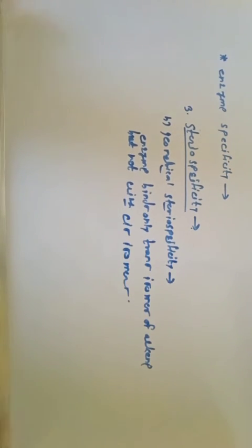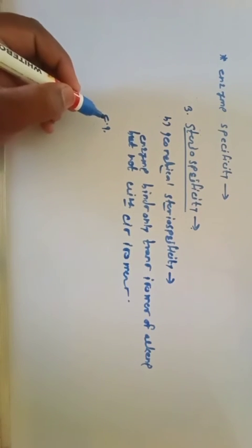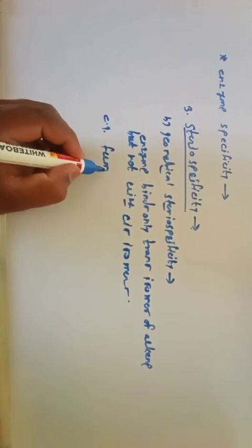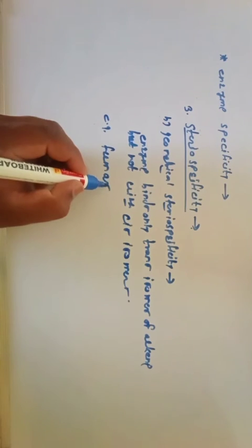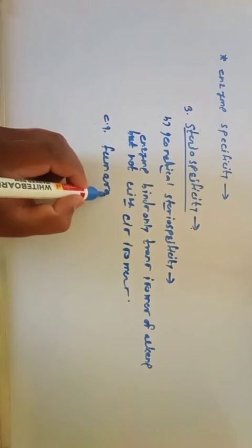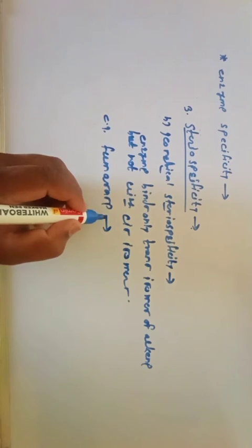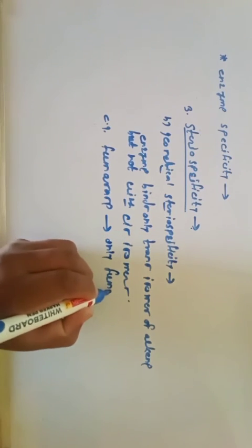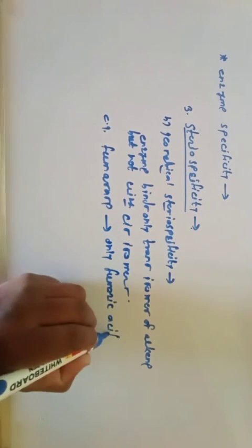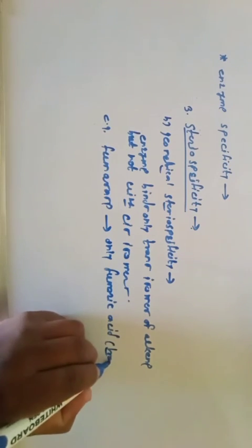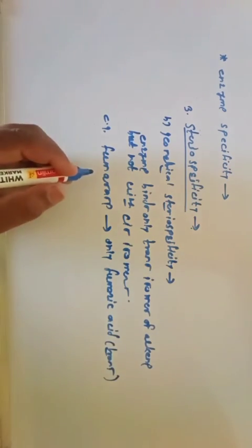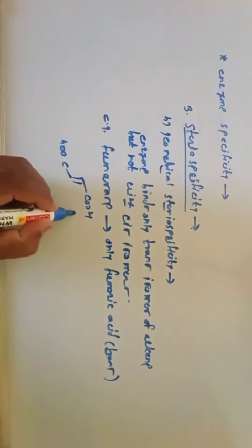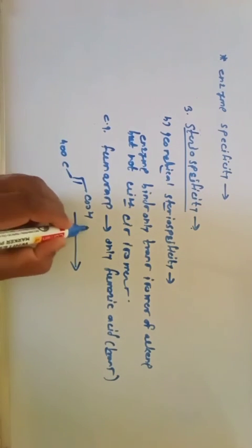An example of such an enzyme is fumarase (F-U-M-A-R-A-S-E). Fumarase acts on fumaric acid, which is the trans isomer of butenedioic acid, containing two –COOH groups.